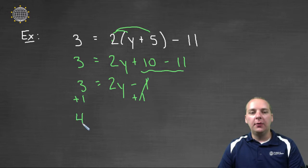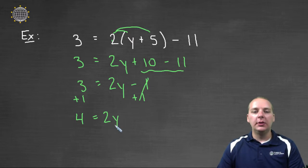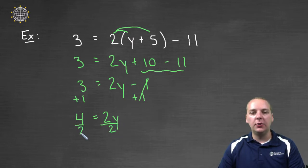So we get 4 = 2y, and then last step, if you remember your steps, was to divide by the variable's coefficient. The variable y has a coefficient of 2, we'll divide both sides by 2, and we're done. We get an answer of y = 2.